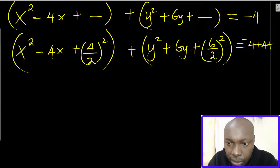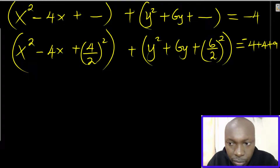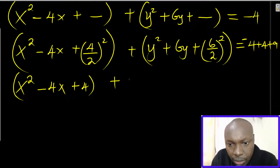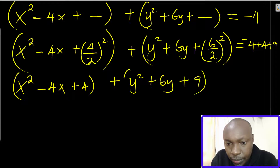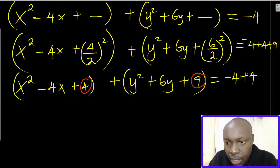Whatever you have added to complete the square must also be added to the right-hand side. So 4 divided by 2 squared gives 4 — add 4 to the right. And 6 divided by 2 is 3, 3 squared is 9 — add 9 to the right. This gives: x squared minus 4x plus 4, plus y squared plus 6y plus 9, equals negative 4 plus 4 plus 9.